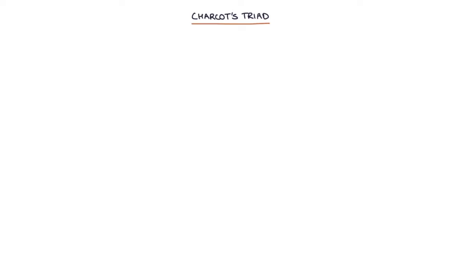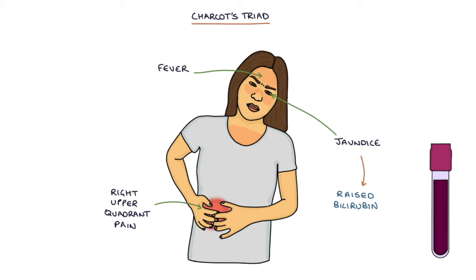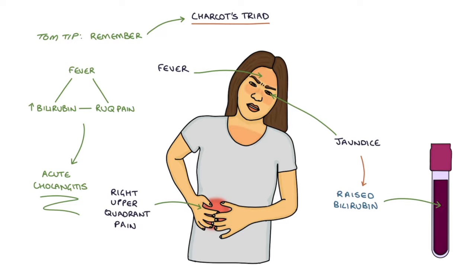Acute cholangitis presents with Charcot's triad, which is three things: right upper quadrant pain, fever, and jaundice. Jaundice refers to when a patient has a raised bilirubin. It's worth remembering Charcot's triad — if you see a patient in your exams with fever, raised bilirubin, and right upper quadrant pain, then you know the diagnosis is acute cholangitis.